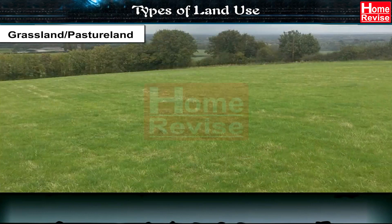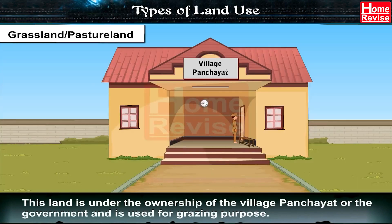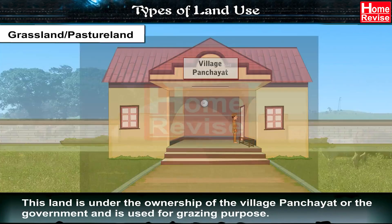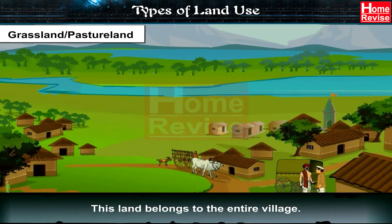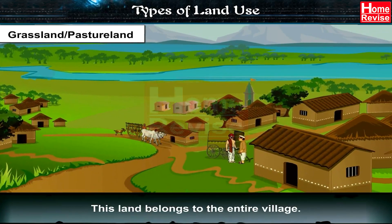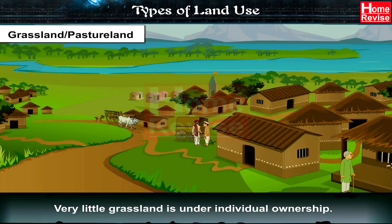Grassland: This land is under the ownership of the village panchayat or the government and is used for grazing purposes. This land belongs to the entire village. Very little grassland is under individual ownership.